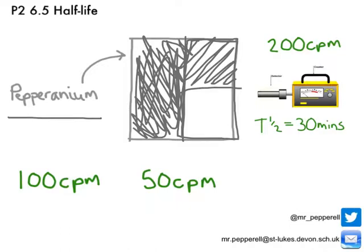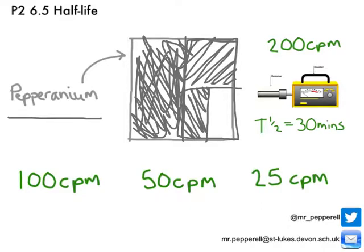So what would we expect again 30 minutes later? Well, 30 minutes later, half of our remaining parent atoms have decayed away, which means our count rate is reduced by half again — this time 50 down to 25. And this will just go on and on. Each time 30 minutes passes, half of our remaining parent atoms decay.